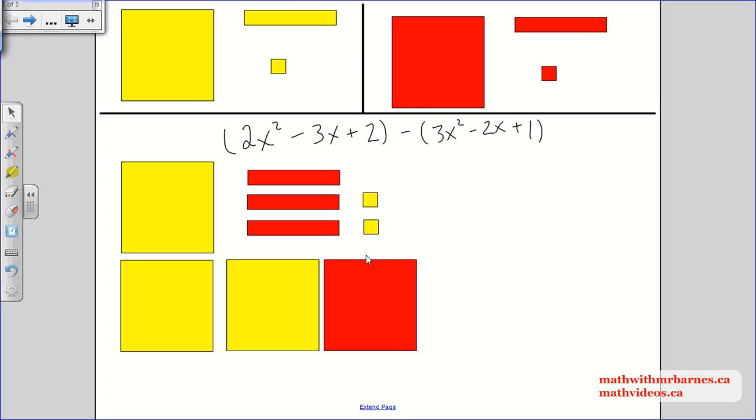Then what I can do is I can take away, I can now take away these 3x squared. I can take away those 3x squared, and if I was doing it on my notebook, I'd do it just like that. I'd shade this one in, I'd bring this one down, I'd shade them in, and then I'd make an arrow, and boom, gone.